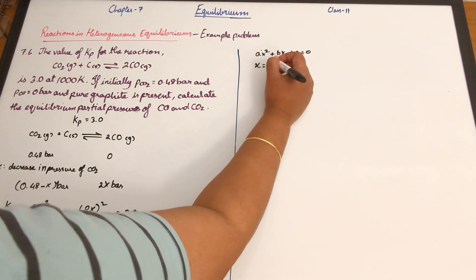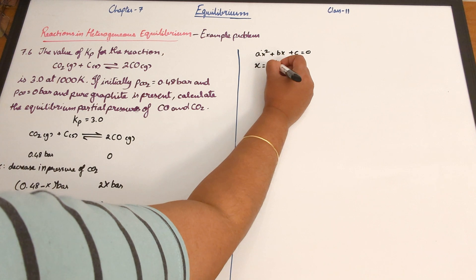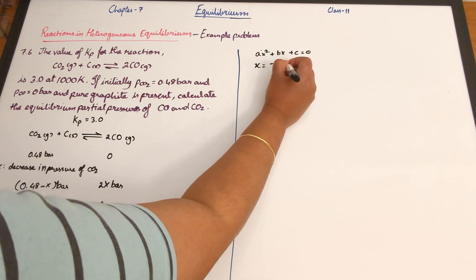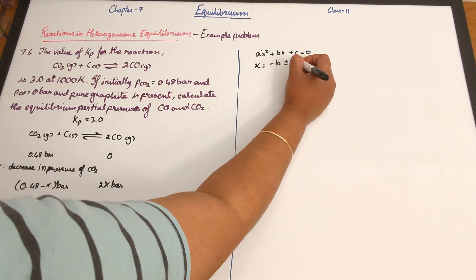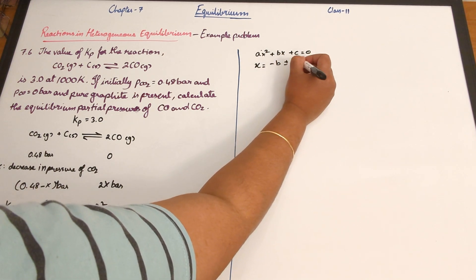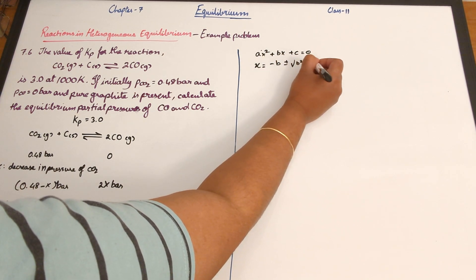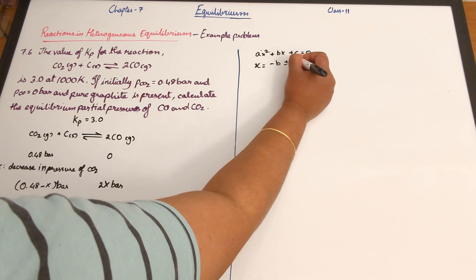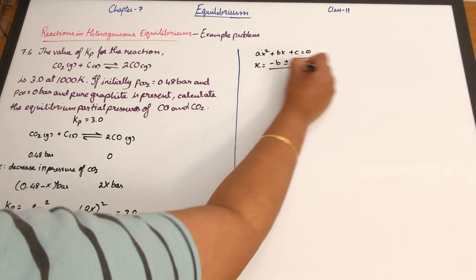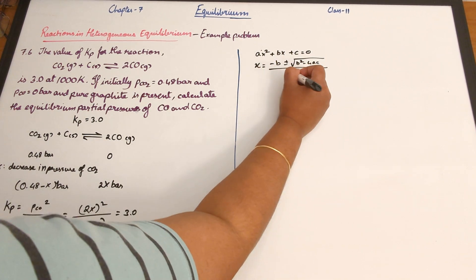Using the quadratic formula, X equals minus B plus or minus the square root of (B² minus 4AC), all divided by 2A.